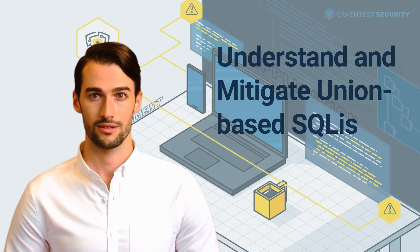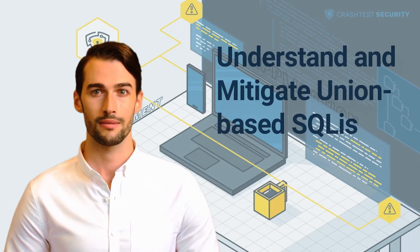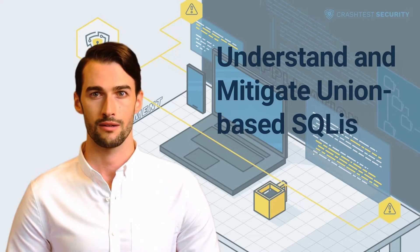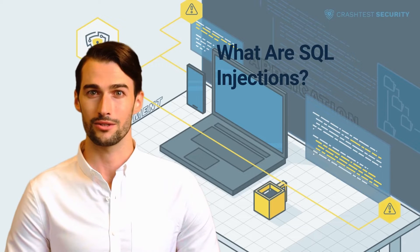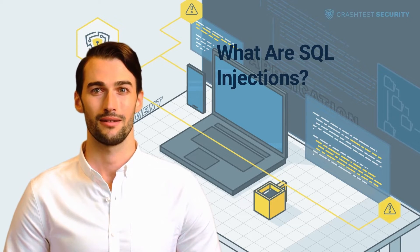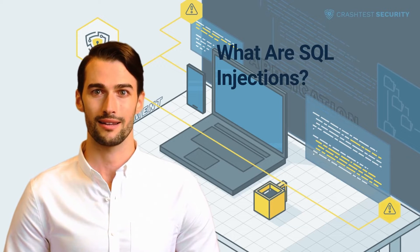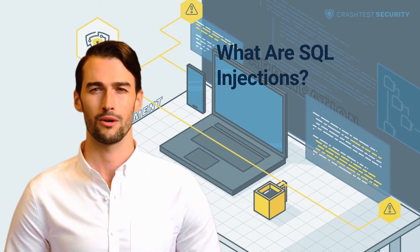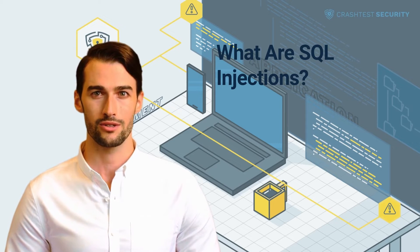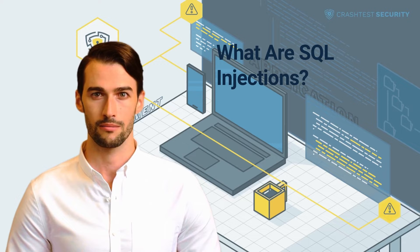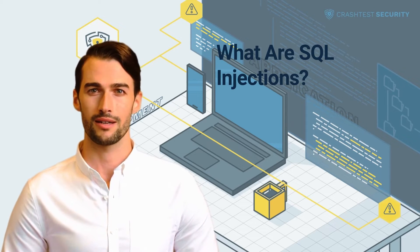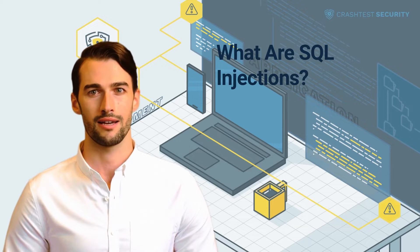In such instances, adversaries can send malicious commands to the backend database or web server to extract classified information, perform unauthorized privileged functions, or even manipulate the server's OS. SQL injection is a web security vulnerability that enables attackers to manipulate an application's backend by altering the queries sent to the database. One of the most common methods of orchestrating such attacks is by inserting a malicious SQL query as input data to the vulnerable SQL application that eventually adversely affects the execution of a predefined legitimate SQL query. The attack subsequently allows hackers to compromise the integrity of the web server and gain unauthorized access to databases.